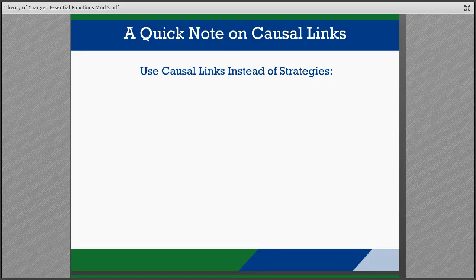By thinking about who or what needs to change, how much change is needed, or how long it might take to bring about change, it will help teams to develop links that are feasible and offer ways to track progress. Consider using causal links instead of strategies.